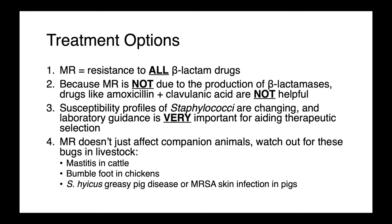To summarize: methicillin resistance is really not about methicillin — what we're really talking about is resistance to all beta-lactam drugs. Because methicillin resistance is not due to the production of beta-lactamases, drugs like amoxicillin with clavulanic acid will not be helpful. The susceptibility profiles of staphylococci are changing and laboratory guidance is very important to help select the most appropriate drug. Methicillin resistance doesn't just affect companion animals — watch out for it in livestock as well, whether it's mastitis in cattle, bumblefoot in chickens, staph hyicus causing greasy pig disease, or MRSA-associated skin infections in pigs.